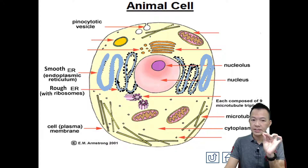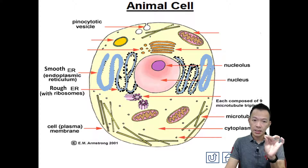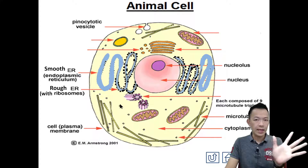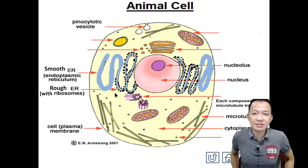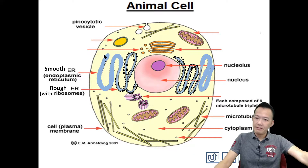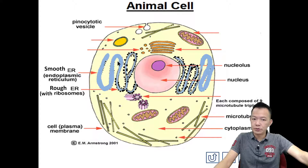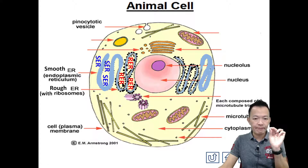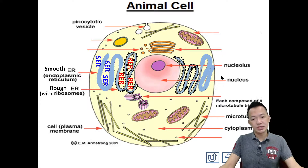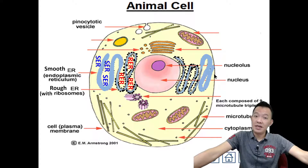So this is draft (rough) endoplasmic reticulum. Besides the rough one, 除了粗的以外，we also have the smooth endoplasmic reticulum - 滑滑的，好像我的脸这样子的. It may be at the end, or separated from the rough endoplasmic reticulum in a corner. Smooth endoplasmic reticulum 它就没有ribosome，它滑滑的. Label them: rough ER = RER, smooth ER = SER.